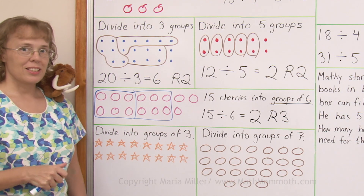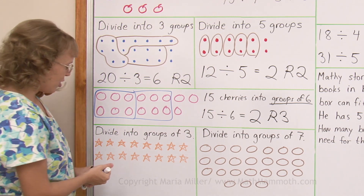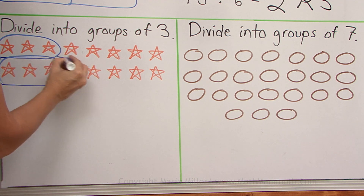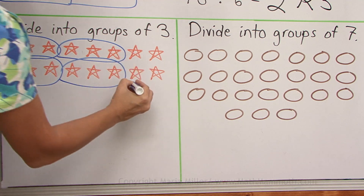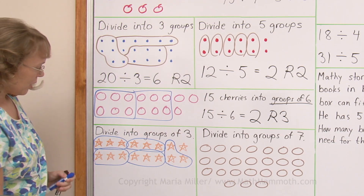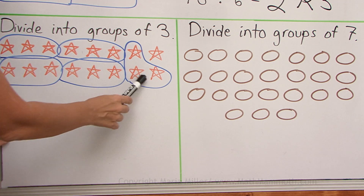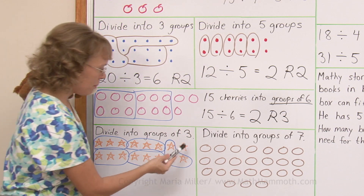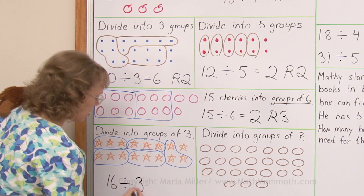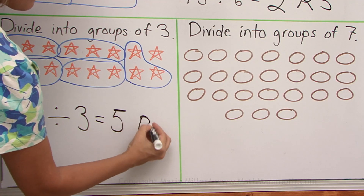Over here let's practice some more with these stars. Divide all these stars into groups of three — you can try to do it yourself while I do the groups. Groups of three: I get one here, another one, and one more. I need to find out the total number of stars to write my division sentence. That would be five groups of three — five times three plus one — that's sixteen. I'm dividing by three, and I get five groups, remainder one.